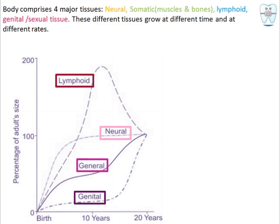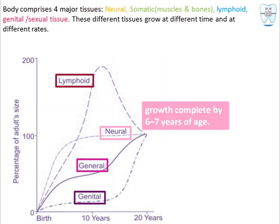For neural tissue, as seen from the curve, growth completes by the age of six to seven years, after which it is stagnant. There is an increasing growth of neural tissue until six to seven years, and then it remains stagnant until 20 years.